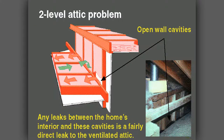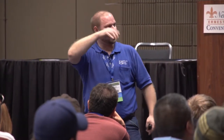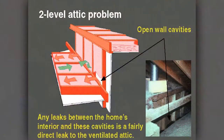Another example is a house with two different ceiling heights — a short knee wall in the attic — where one room is eight feet and the next is nine feet. With the blower door running and a thermal camera, the entire wall was blue from top to bottom. Usually you see just some blue streaks, but the entire wall was blue — a giant bypass.